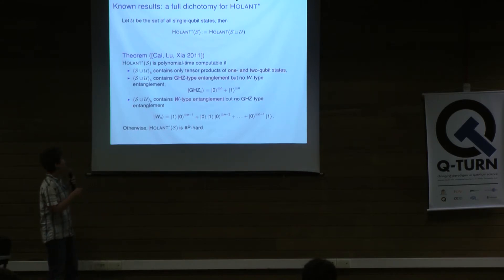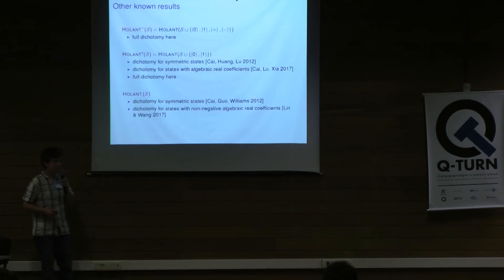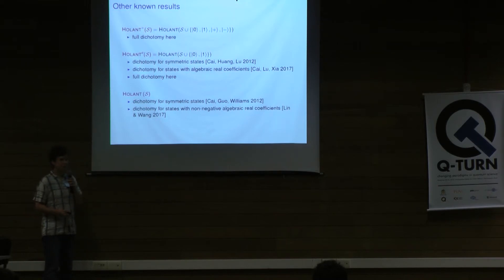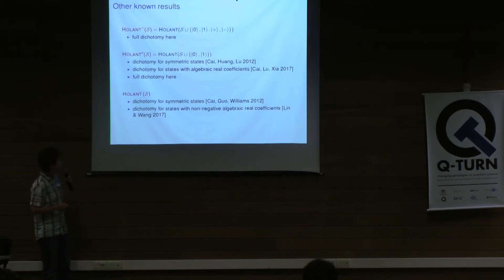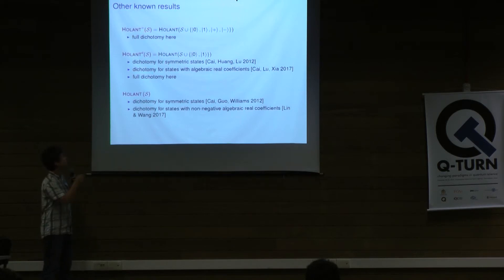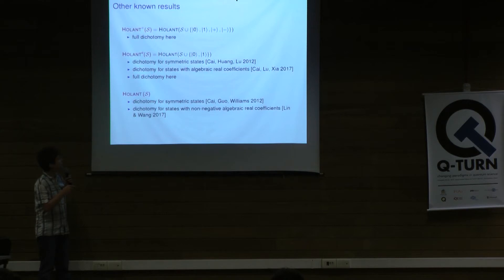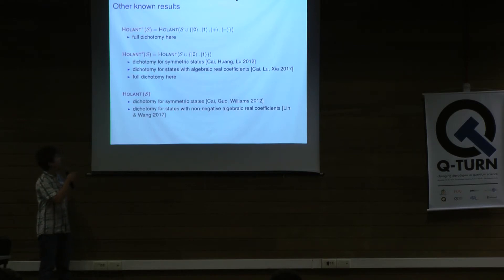That was Holant Star, the first big complexity classification for holant problems. For the full holant problem there isn't a full classification yet; people have made other kinds of restrictions, such as only considering fully symmetric states or states with non-negative real coefficients. There are also two intermediate problems I'll be talking about: Holant Plus, which I defined because I didn't know how to attack Holant C directly, and Holant C. By combining work on Holant Plus with a new result about Holant C for real coefficients, I was able to obtain a full result for Holant C. These are the two results I'll present next.